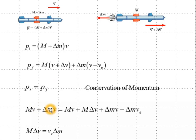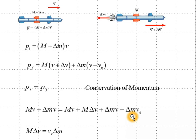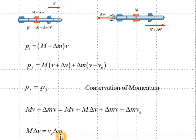On the left we have two terms: Mv plus delta Mv. On the right we have four terms: Mv plus M delta V plus delta Mv minus delta M times the exhaust speed of the fuel. Notice that Mv and delta Mv are common to both sides and cancel. Our conservation of momentum equation reduces to M delta V equals the exhaust speed times delta M of the fuel.